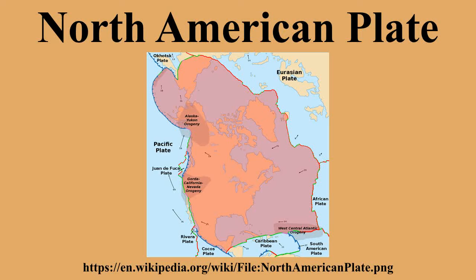The plate includes both continental and oceanic crust. The interior of the main continental landmass includes an extensive granitic core called a craton. Along most of the edges of this craton are fragments of crustal material called terrains, accreted to the craton by tectonic actions over the long span of geologic time. It is thought that much of North America west of the Rocky Mountains is composed of such terrains.